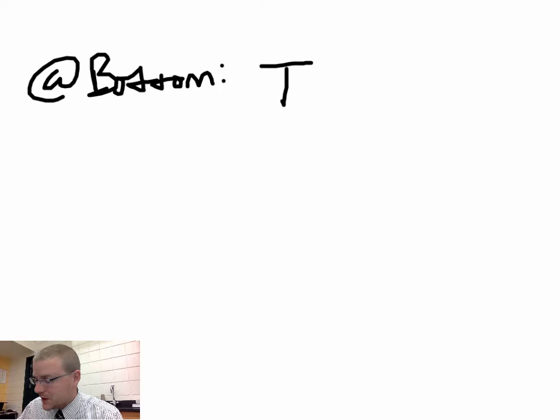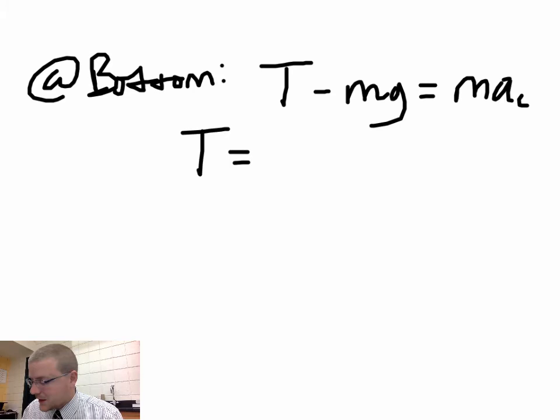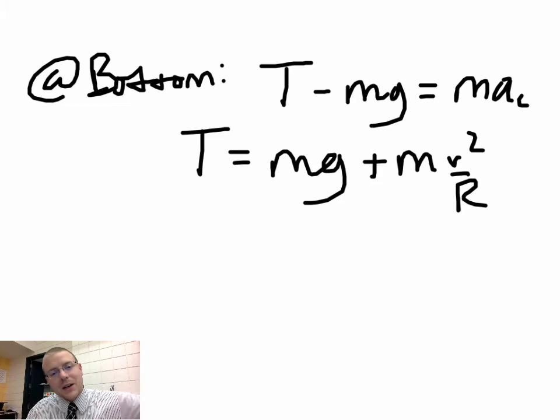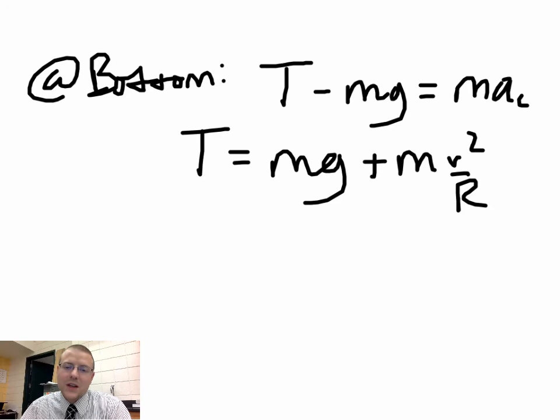At the bottom of the circle, tension acts upward and gravity downward, but now the centripetal acceleration is directed upward toward the center. Solving for tension: T = mg + mv²/r. Not only does your arm have to hold the weight of the bucket, but it also has to supply an extra mv²/r of centripetal force upward. So you pull much harder at the bottom than at the top.